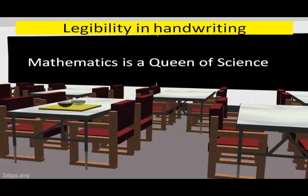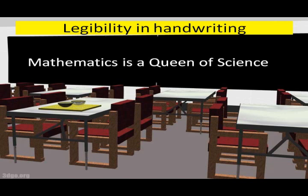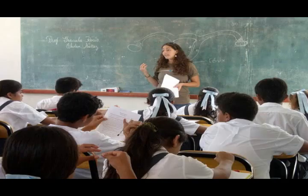Components and description of the skill of blackboard writing. The first component is legibility in handwriting. The descriptions of this component include: distinct letters, adequate spacing between letters and words, adequate size for letters, and different sizes for capital and small letters.